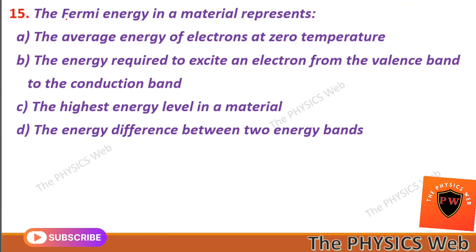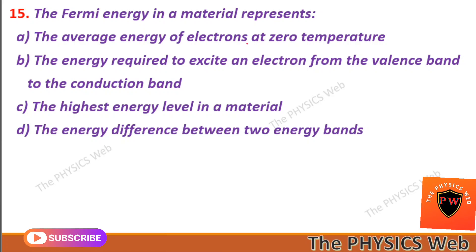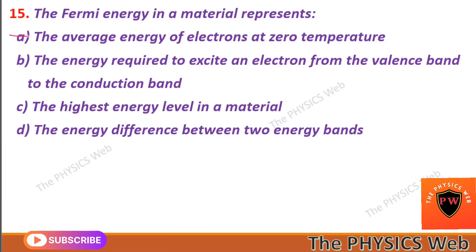Next, question fifteen: the Fermi energy in a material represents the average energy of electrons at zero temperature. So A is your correct option.